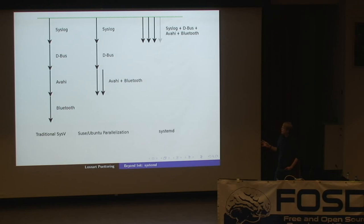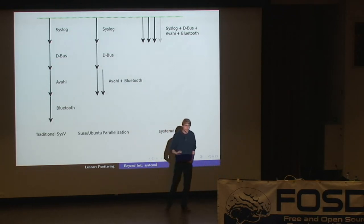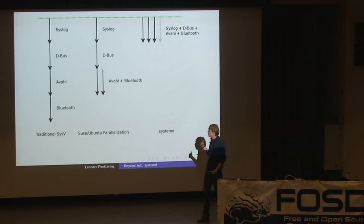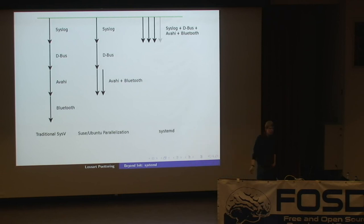A couple of people looked at this and said the ordering between syslog, D-Bus and Avahi we can't do much about, nor the one between syslog, D-Bus and Bluetooth. But we could parallelize Avahi and Bluetooth since they have no dependency. That led to the middle kind of parallelization: syslog and D-Bus are still started one after the other, and Avahi and Bluetooth are started afterwards but at the same time. This is how Upstart works. It's an improvement — traditional System 5 took like four arrows and this one just takes three — but it's not as good as we do it in systemd.